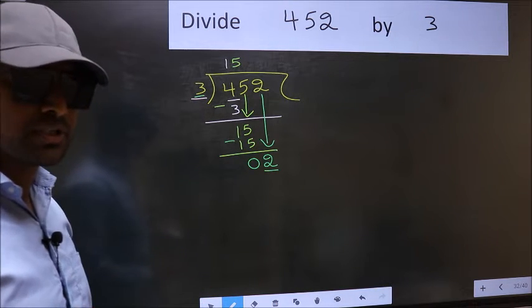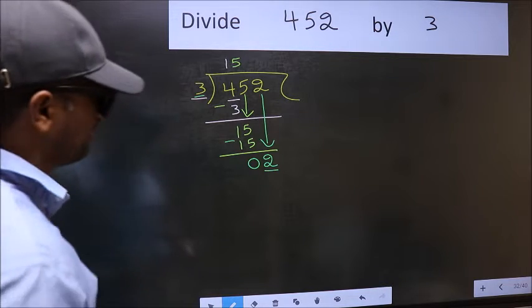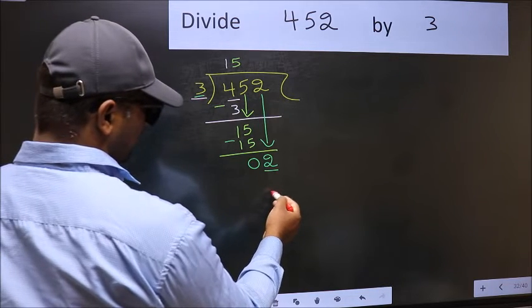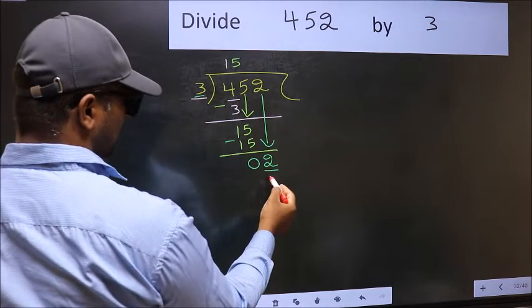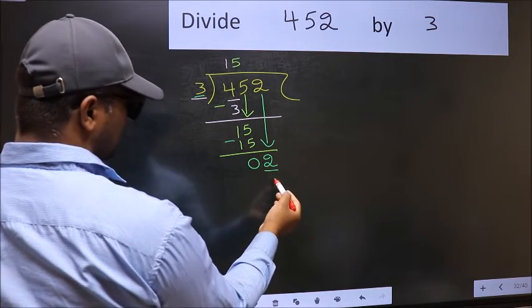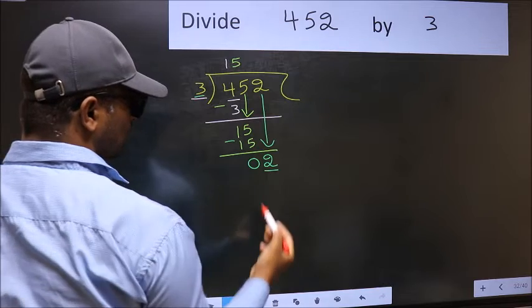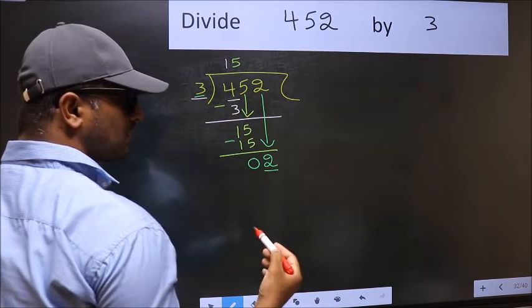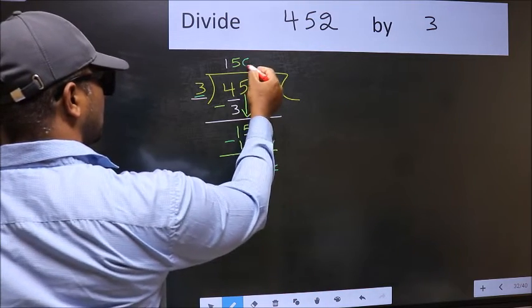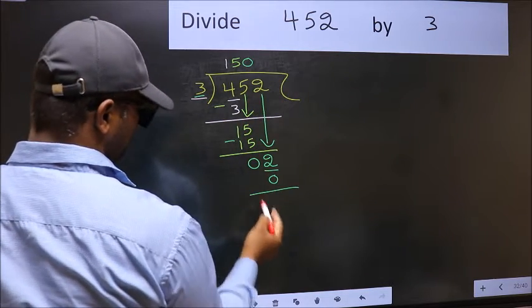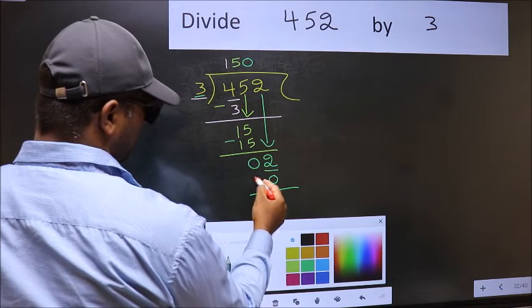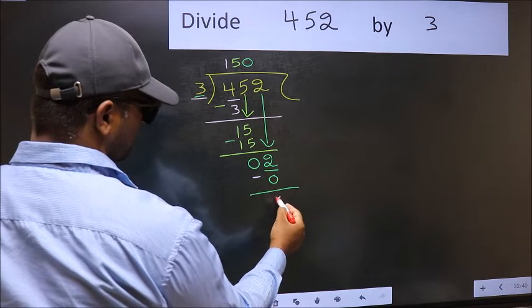Instead, what you should think of is what number should we write here? If I take 1 here, I will get 3. But 3 is larger than 2. So what we should do is we should put 0. So 3 into 0, 0. Now you subtract 2 minus 0, 2.